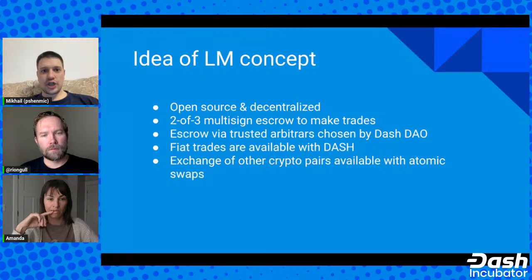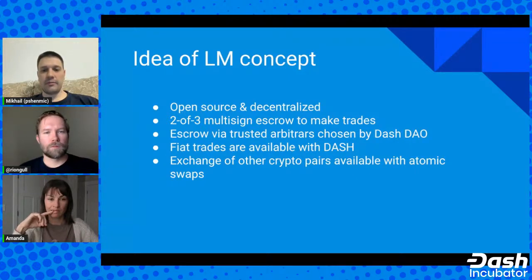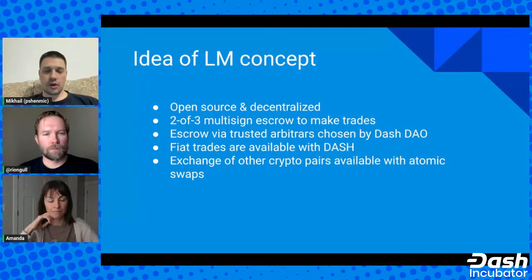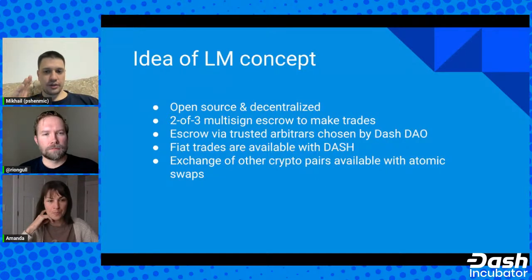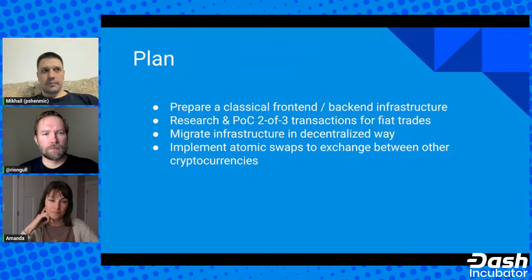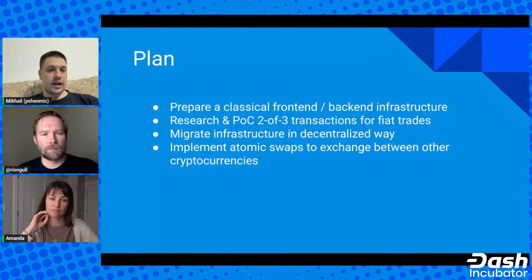Fiat trades will be available to buy or sell Dash, and some other crypto pairs will also be available — but those will be done through atomic swaps and time-locked contracts. So it's not only about buying and selling Dash; you can also exchange different cryptocurrencies on the platform. The plan is to start with research into how to make the escrow work and how to implement multi-signature transactions.